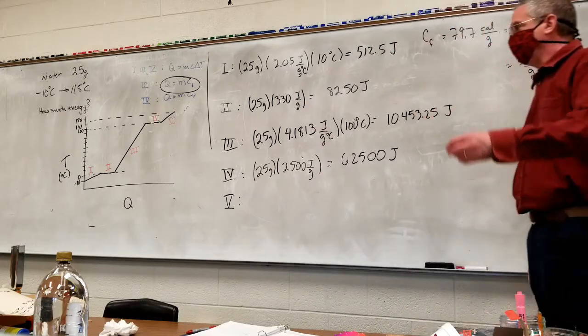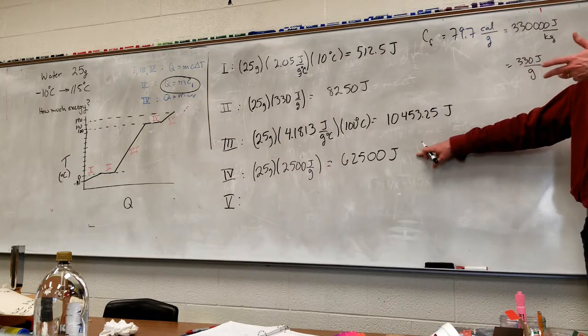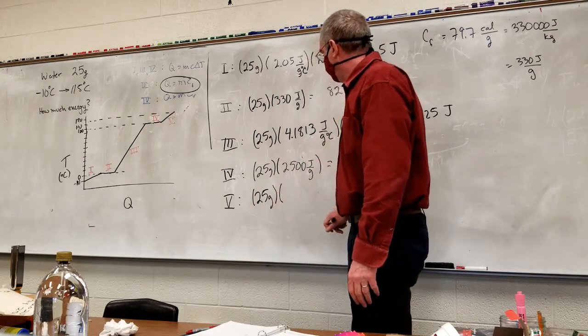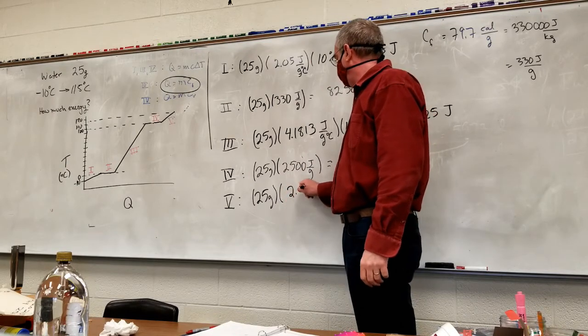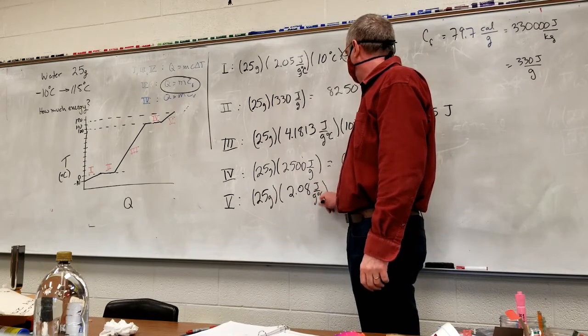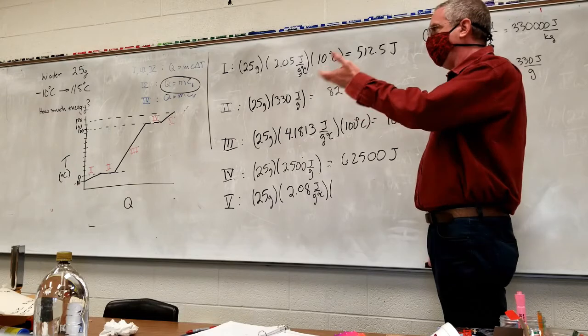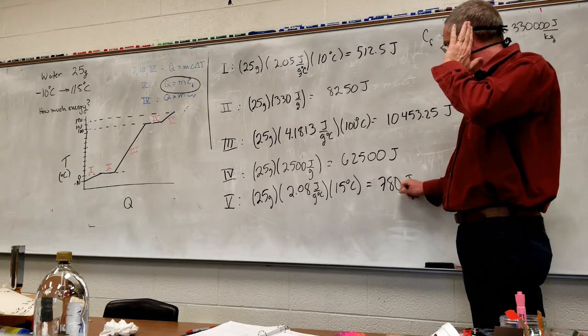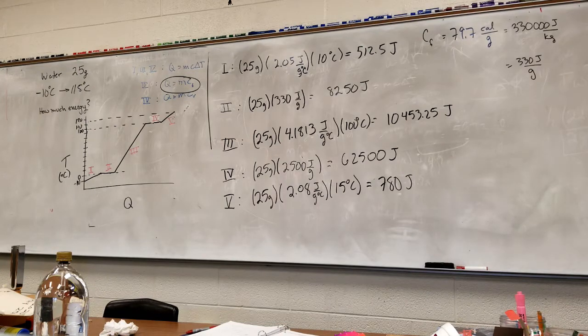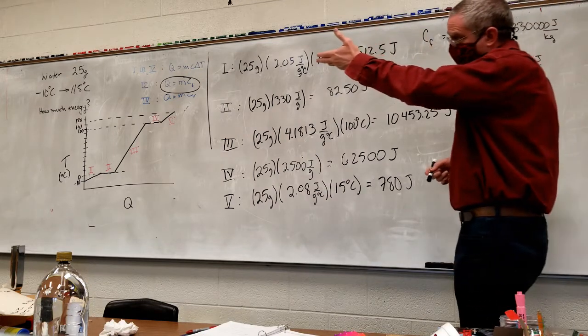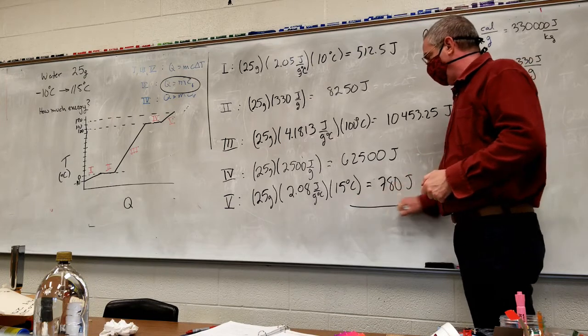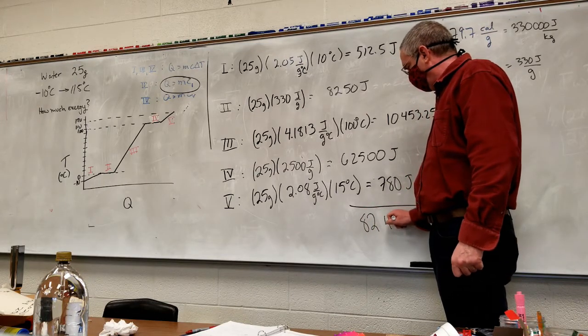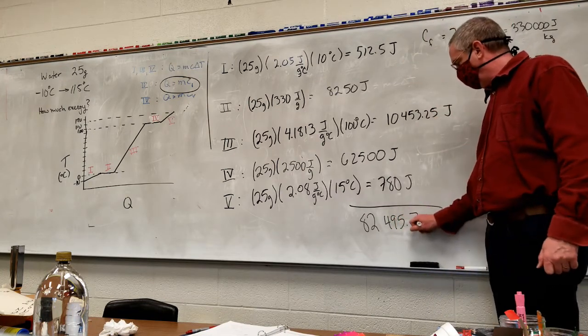And then the last little bit, we're taking our, at this point we've boiled the water, turned it into steam, and so now we're going to raise the temperature of that. Specific heat of steam, it's very similar to ice, 2.08 joules per gram degree Celsius, times, at this point we're at 100 degrees Celsius, we need to raise it just the 15 degrees. So that's the amount of energy it requires put into this bit of water in order to get it from negative 10 degrees Celsius to 115 degrees Celsius. And therefore the total energy is 72,495.75 joules.